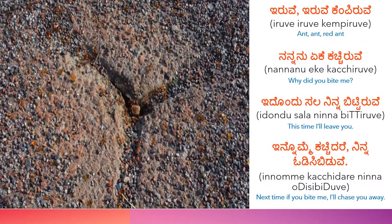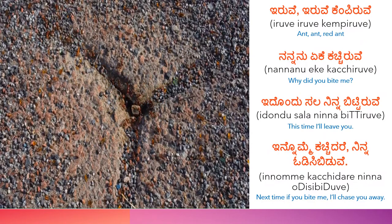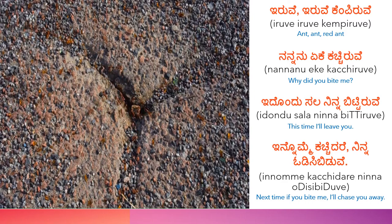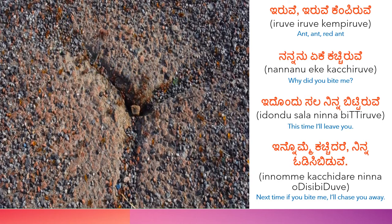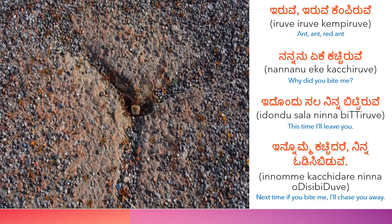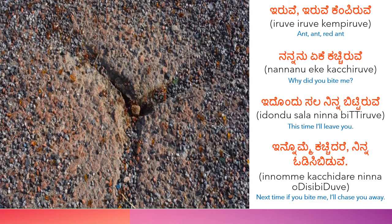Iruwe, Iruwe, Kempe Iruwe — Nananannu yeke Kacchiruwe? Idhu andhu salaninna bittiruwe. Ant, Ant, Red Ant — Why did you bite me? This time I leave you. Next time if you bite me, I'll chase you away.